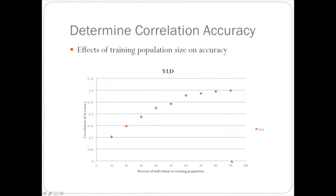But when 90 percent of the individuals are put into the training population, there's a lot more information to estimate the marker effects, so the correlation accuracy goes up. And this is seen in many of the literature and genomic selection.